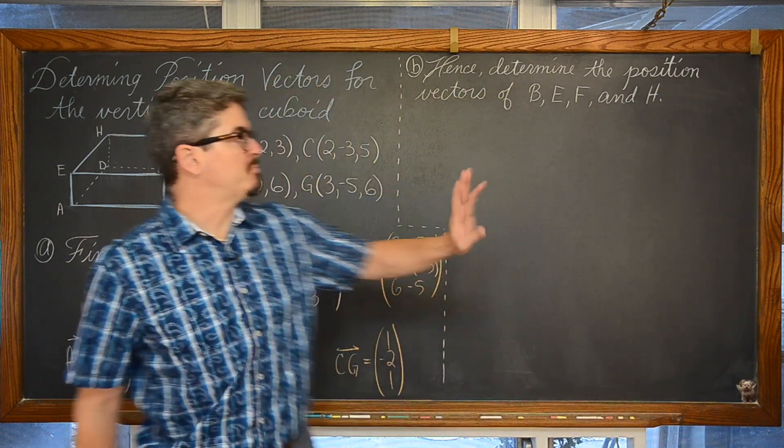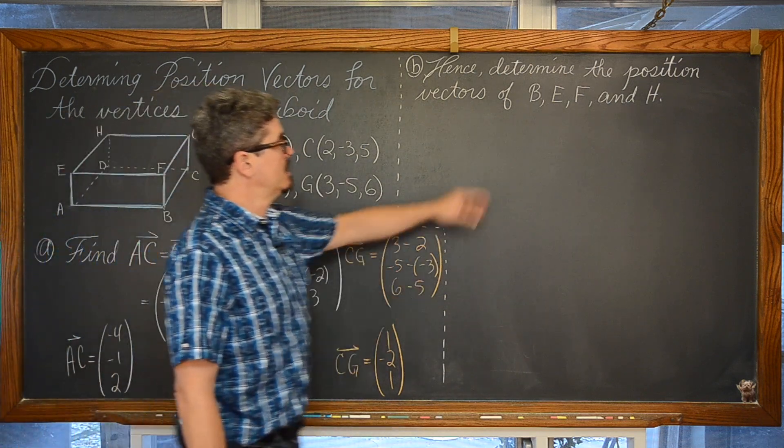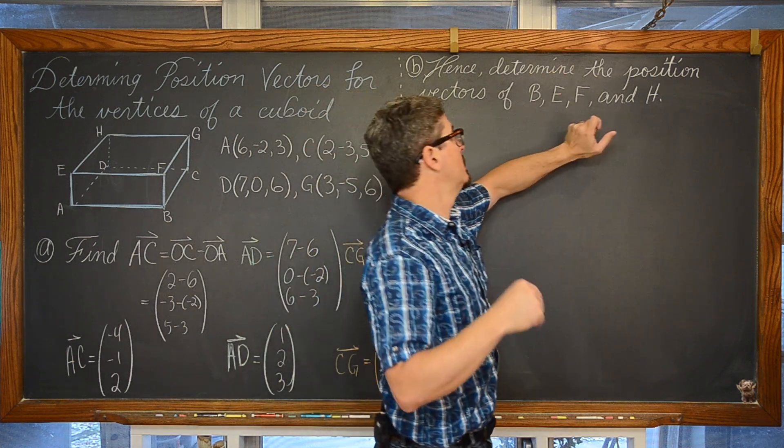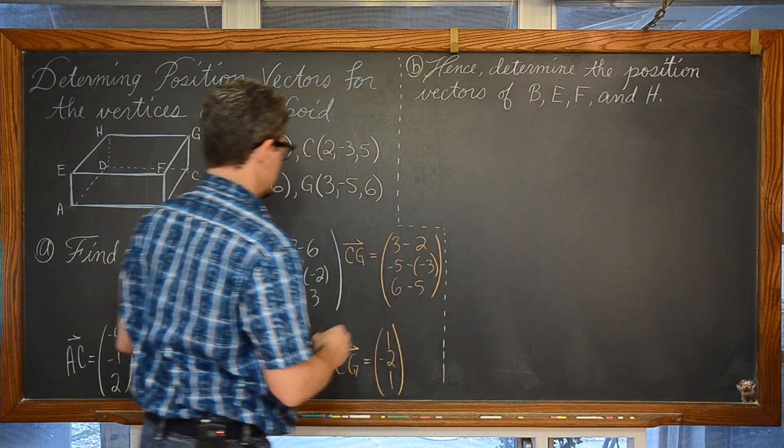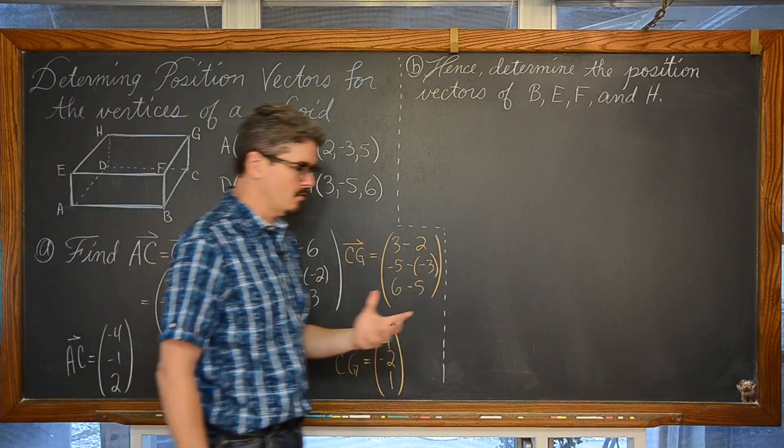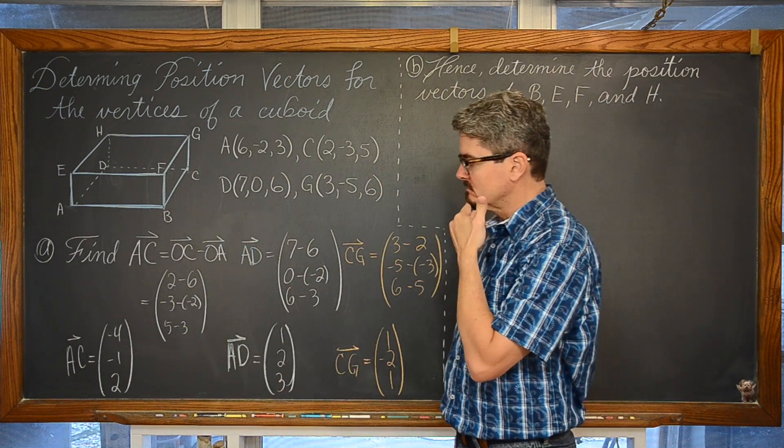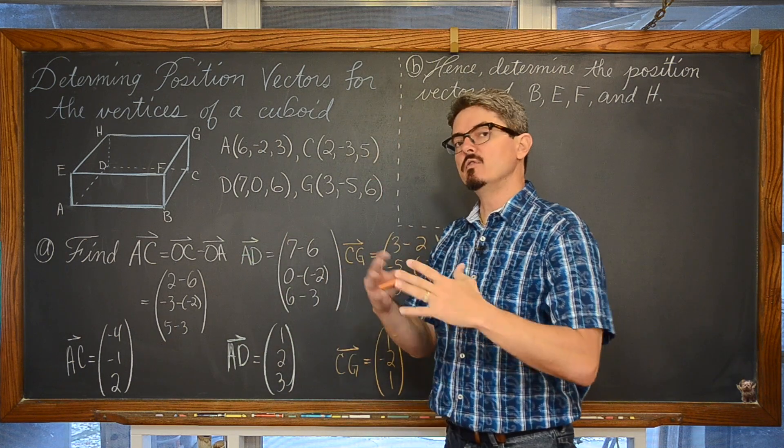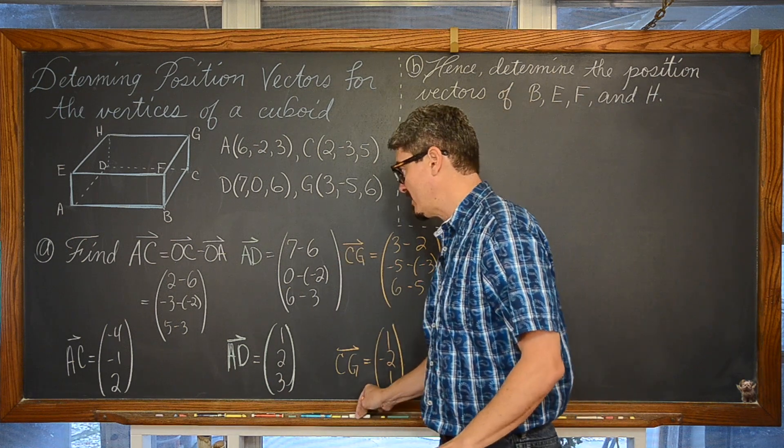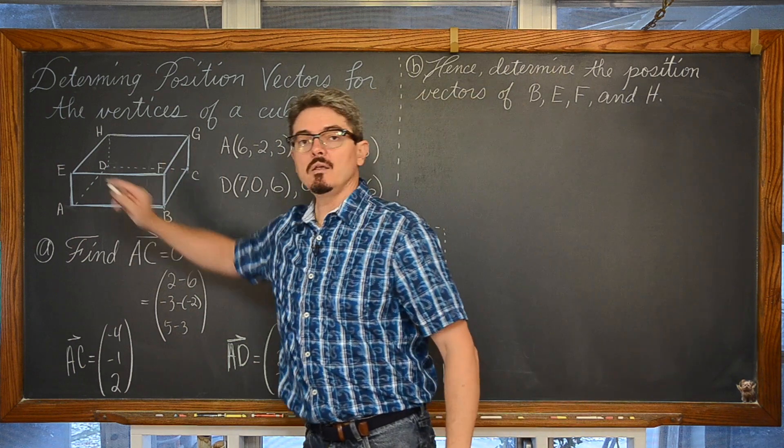So now when I get to part B, and it says hence, use these three vectors to find the position vectors. We are going to find vector OB, vector OE, OF, and finally vector OH using these three vectors. Let's make sure that you know how to use that triangular method process to add multiple vectors and move along throughout space.